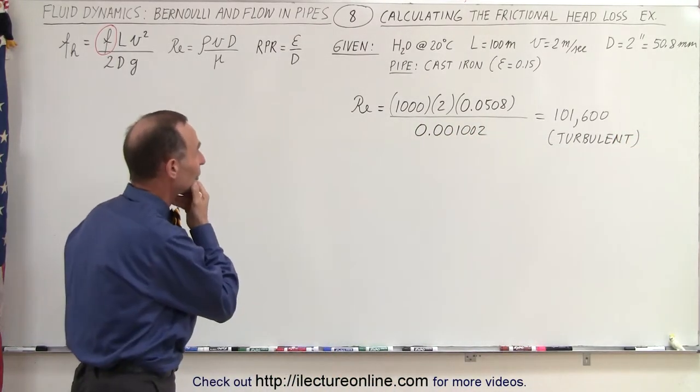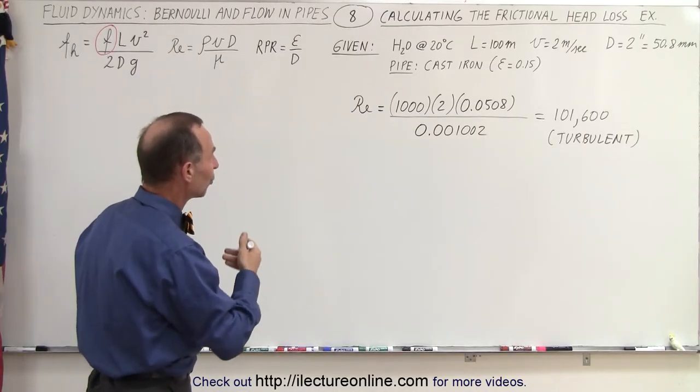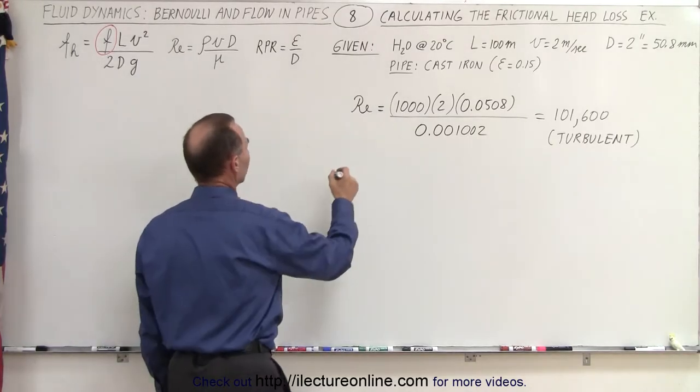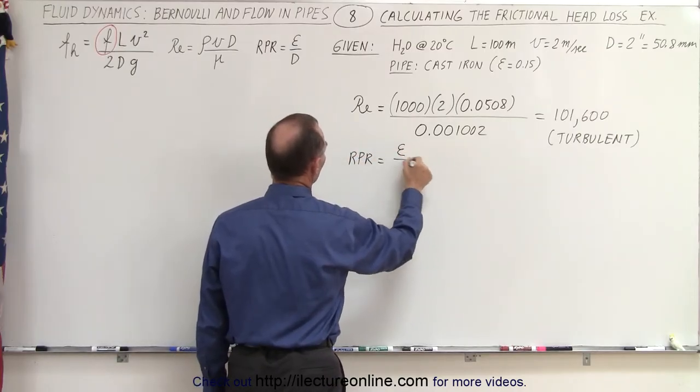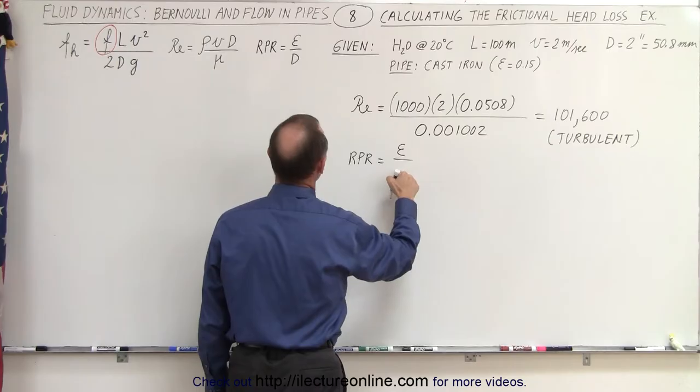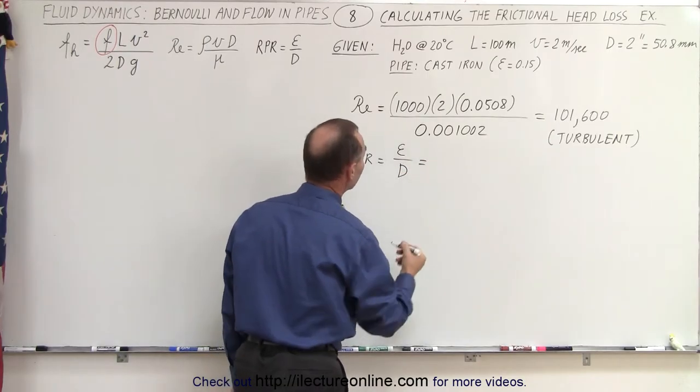Next thing we need to do is going to use the Moody diagram. We're going to need to find the relative pipe roughness. So the RPR is going to be the constant relative to the pipe divided by the pipe diameter and that's going to be in millimeters.